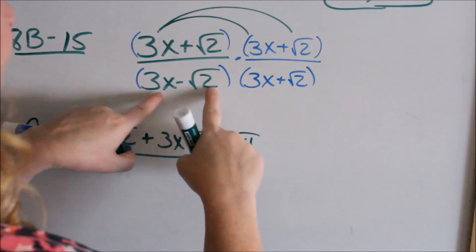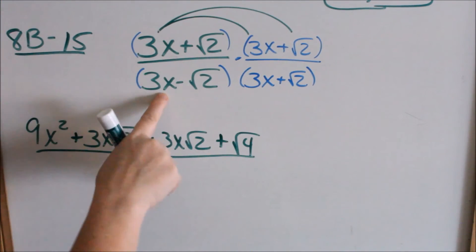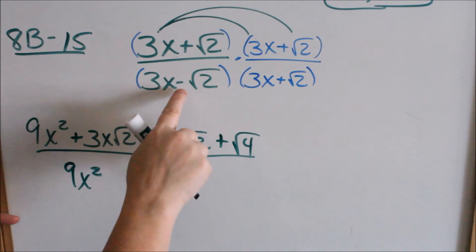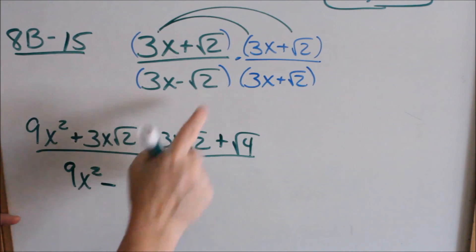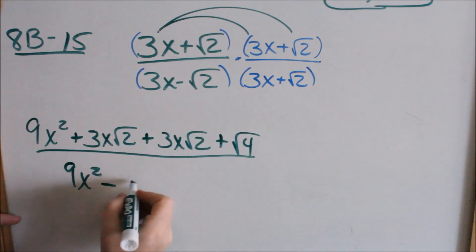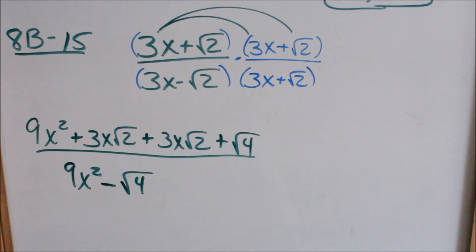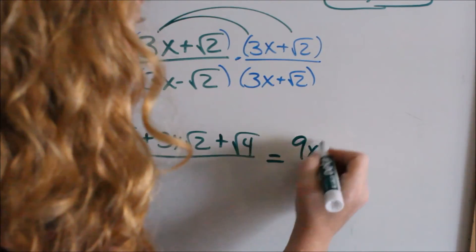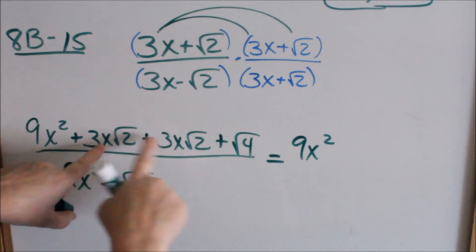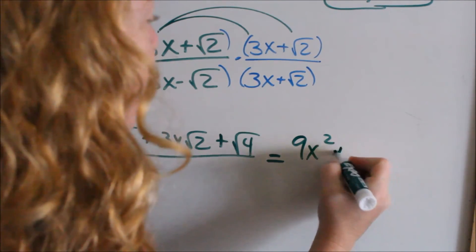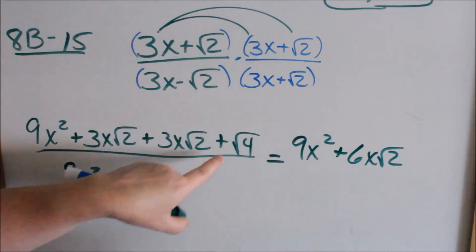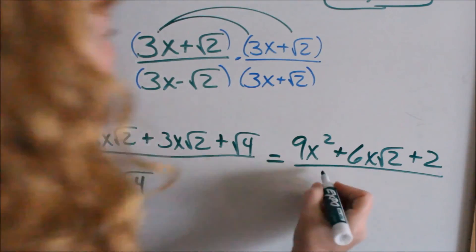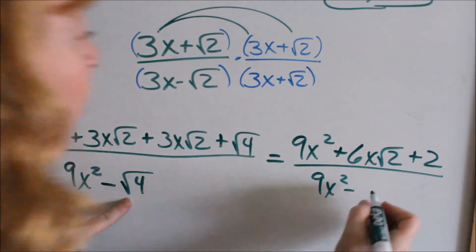Now I'm going to do the quick way for the denominator. You square both of these with a subtraction sign in the middle. If I square 3x — 3x times 3x is 9x squared. My middle terms cancel, and then I have a negative times a positive, which is a negative. Square root of 2 times square root of 2 is square root of 4. That's the shortcut way. In the numerator: nothing combines with 9x squared. I have 3x plus 3x of square root of 2, which is plus 6x square root of 2. Then plus square root of 4, which is 2. In the denominator: 9x squared minus 2.